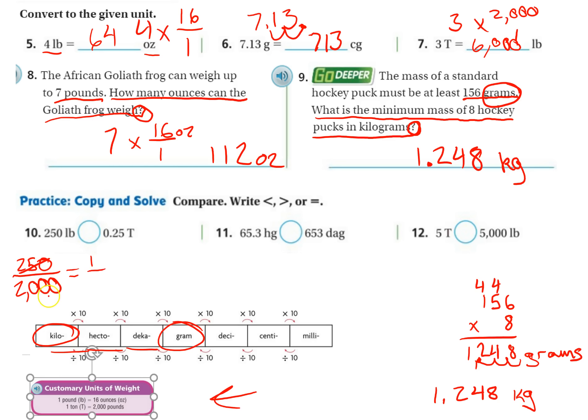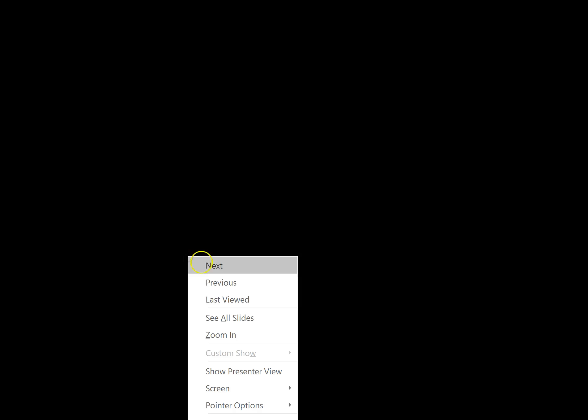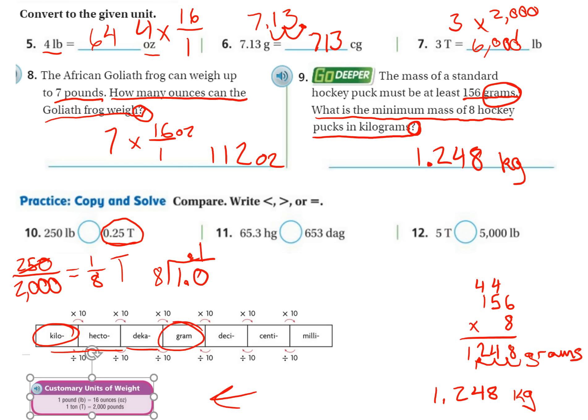So I'm going to simplify that. 250 can go into 250 one time. 250 goes into 2,000... well, it goes into 1,000 four times, so it'd go into 2,000 eight times. So that's one-eighth of a ton. But I want to change that now to a decimal because I got tons in decimals over here. So I divide the denominator into the numerator. I can add my decimal, add my zero, and eight goes into 10 one time. So I can stop right there. I actually don't need to finish this out.